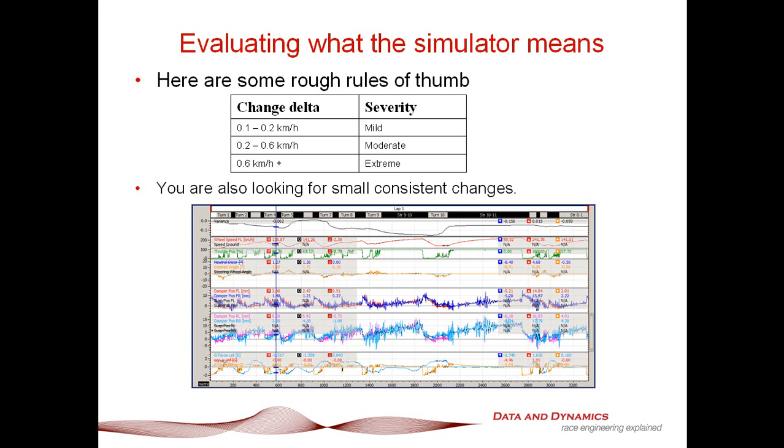Evaluating what the simulator means. Here are some rough rules of thumb. Change delta: if you're seeing a simulated change between 0.1 to 0.2 kph, you've got a mild change. It's probably worth a go, but you wouldn't get overly worked up about it. 0.2 to 0.6 kph, that's a moderate change, which was an example of what we had done previously. Anything over 0.6 kph, that's extreme. As a rough rule of thumb, when you take the track, you're going to see some big changes on that. The other key thing is that you are looking for small and consistent changes in your C time.